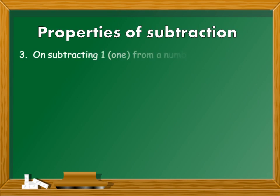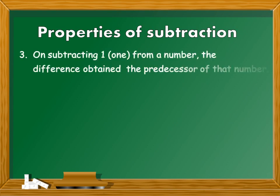Property number 3: On subtracting 1 from a number, the difference obtained is the predecessor of that number. For example, 70 minus 1 will be the predecessor of 70, which is 69. 225 minus 1 will be the predecessor of 225, which is 224.